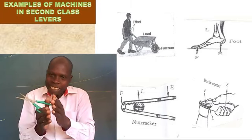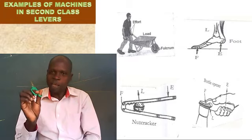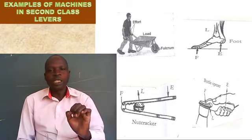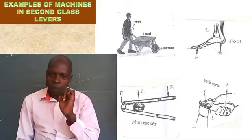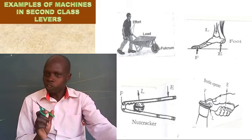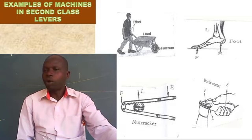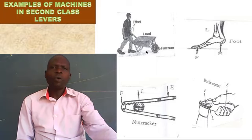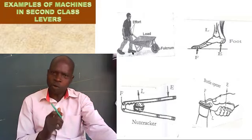So all that we have just seen here — apart from the pair of scissors I'm holding — all that is in my diagram. Those are tools in the second class levers. Now to complete this, one thing I want you to know is that when they're using these tools, you should know in which direction the effort goes.